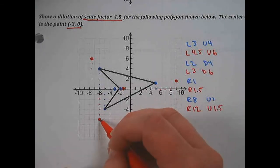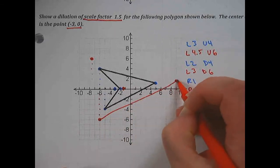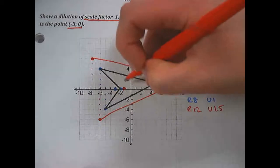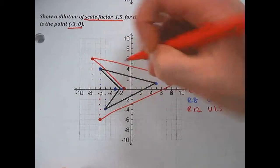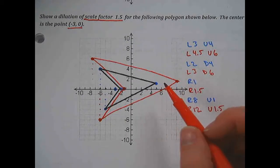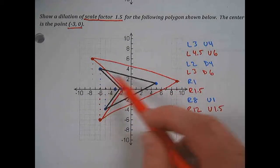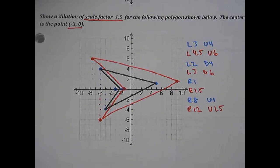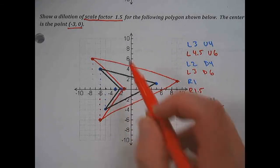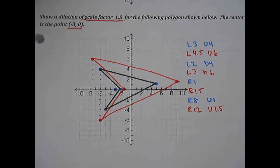Now I'm connecting all my red dots. We should get something looking like this, which is good because it looks a lot like our original shape, just a little bit bigger. So that's how we dilate about a center of dilation with a scale factor of 1.5. Hopefully that was helpful. Good luck on your homework.